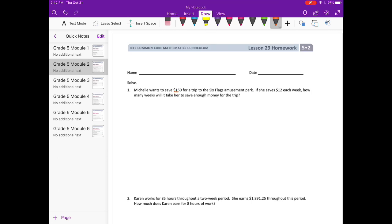So she needs $150 and she's saving $12 each week. We can divide to figure out how many weeks it's going to take her. 150 divided by 12. 12 can't go into 1. It can go into 15 one time. 1 times 12 is 12. We subtract and get 3 and bring down the 0.